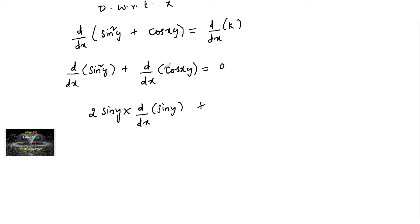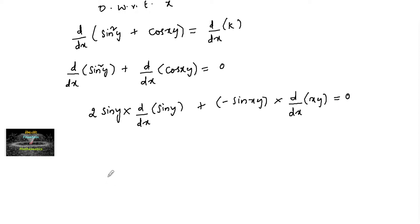Plus differentiation of cos(xy): differentiation of cos is negative, so we get minus sin(xy) into d/dx of xy by the chain rule, equal to 0. Also, 2 sin y into d/dx of sin y gives 2 sin y · cos y · dy/dx.